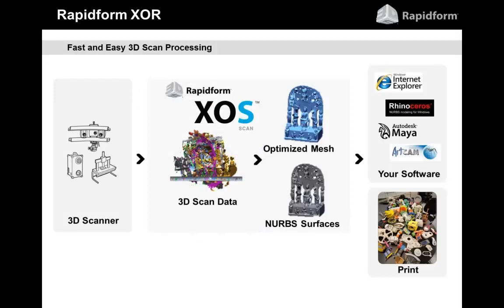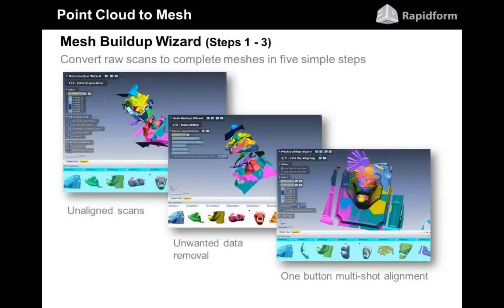RapidForm XOS is a subset of XOR that does point cloud processing, mesh processing, and NURBS surfacing, but not the CAD solid modeling that XOR does. We start with the 3D scanner, clean up all the scan data, then make an optimized mesh or NURBS surfaces and output to non-mechanical applications such as Rhino or Maya for animation. Of course, you can also 3D print parts that come out of RapidForm XOS.